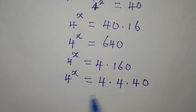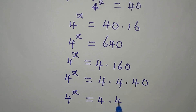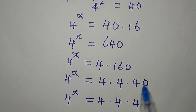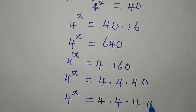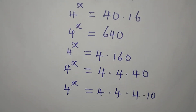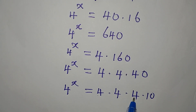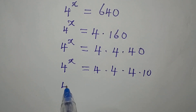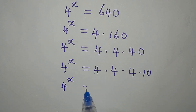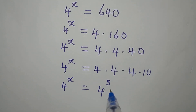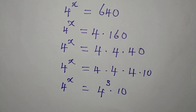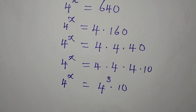We can still break it down again. So 4 to the power of x equals 4 times 4 times 4 times 4 times 10, because 4 times 4 times 4 times 4 times 10 gives us 640. And this means that we have 4 to the power of x equal to 4 to the power of 3 multiplied by 10. So it cannot really be written completely in the base of 4.